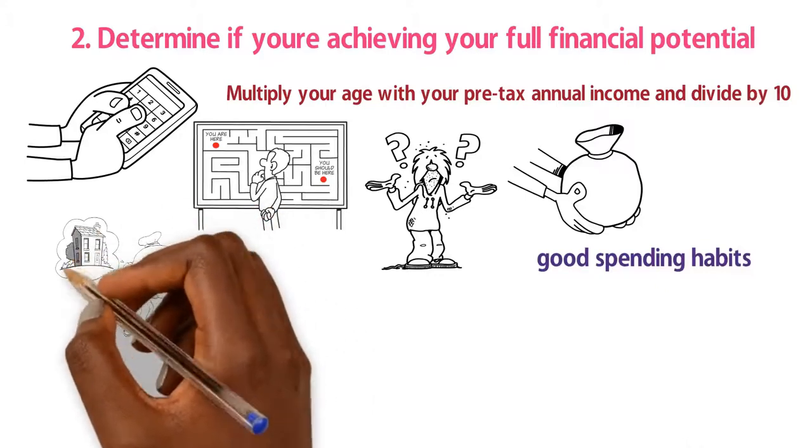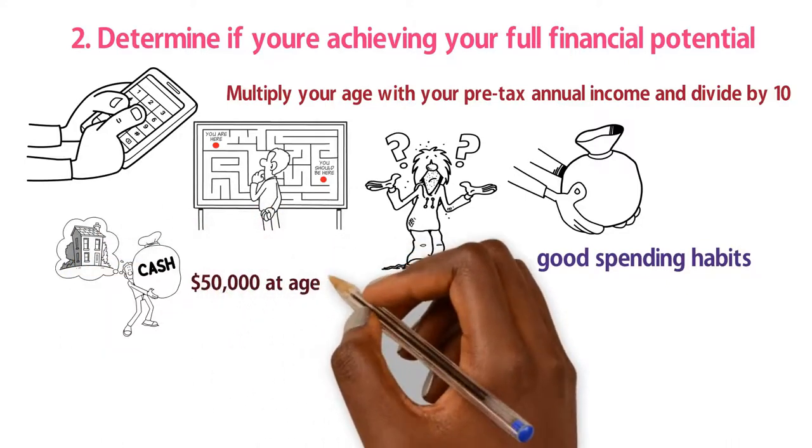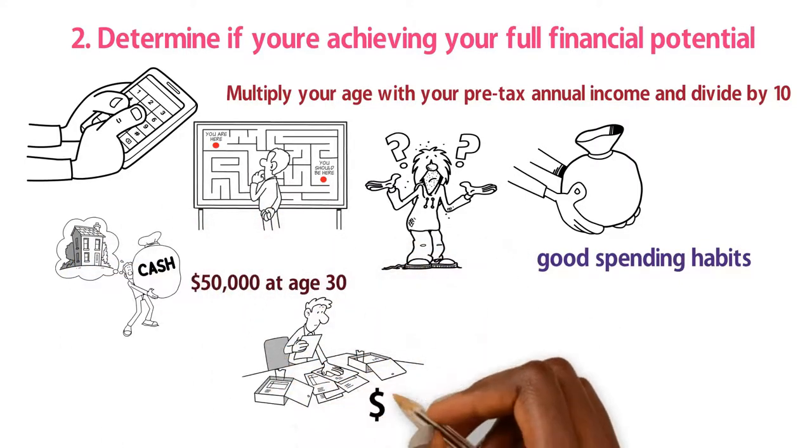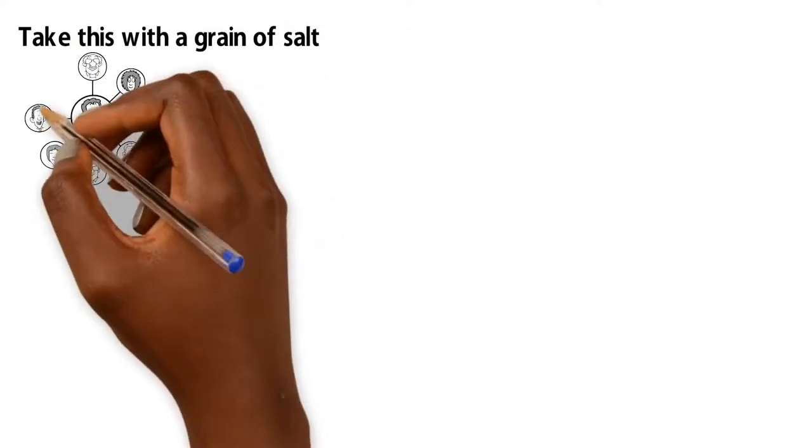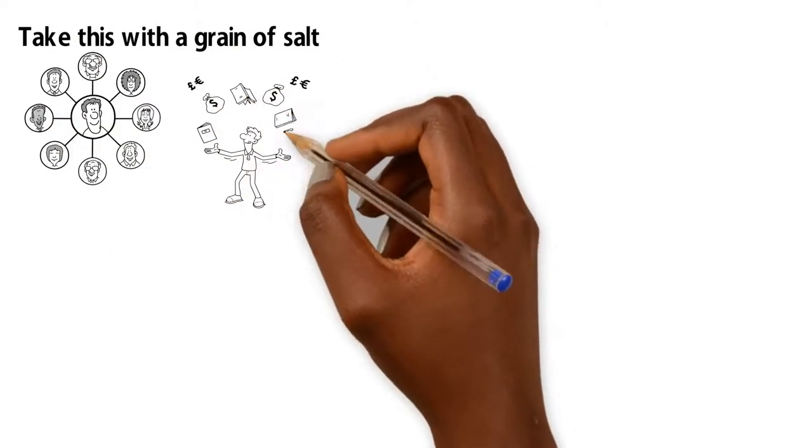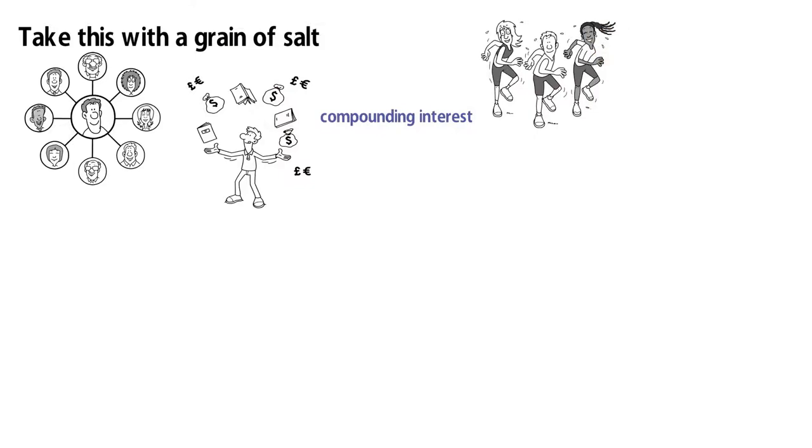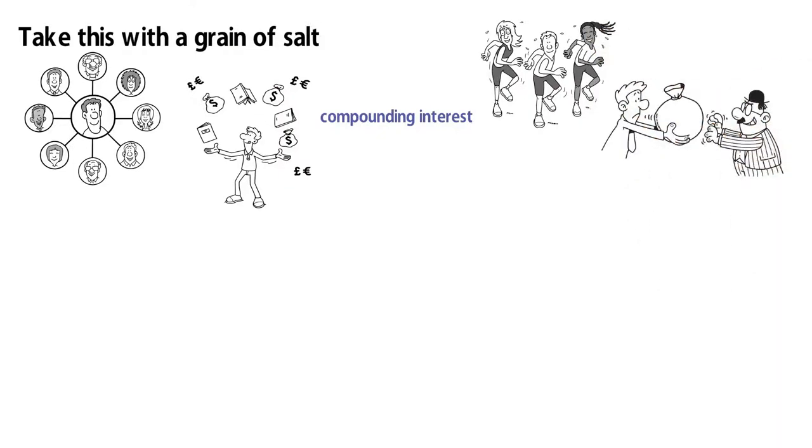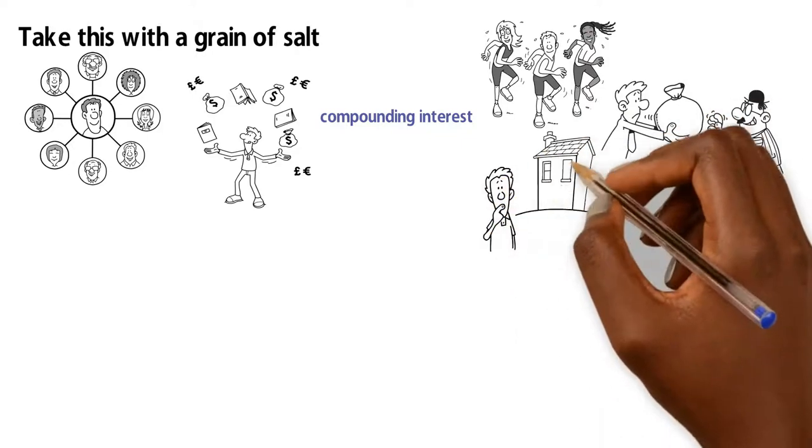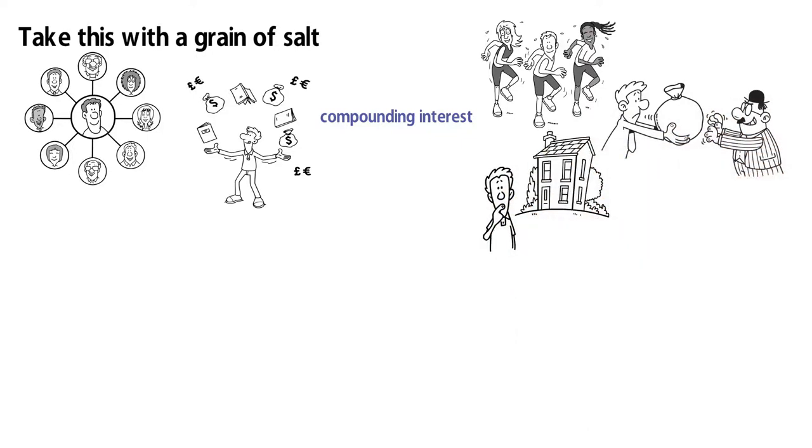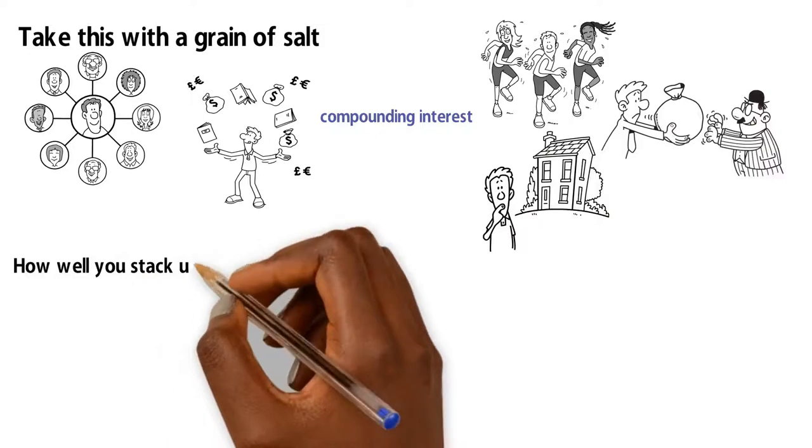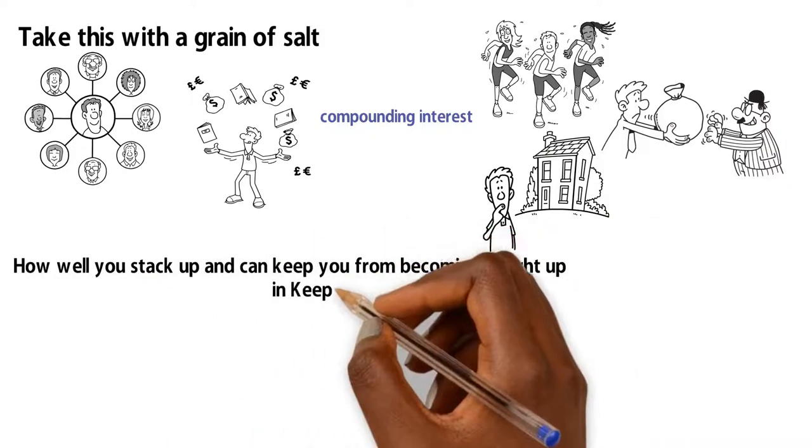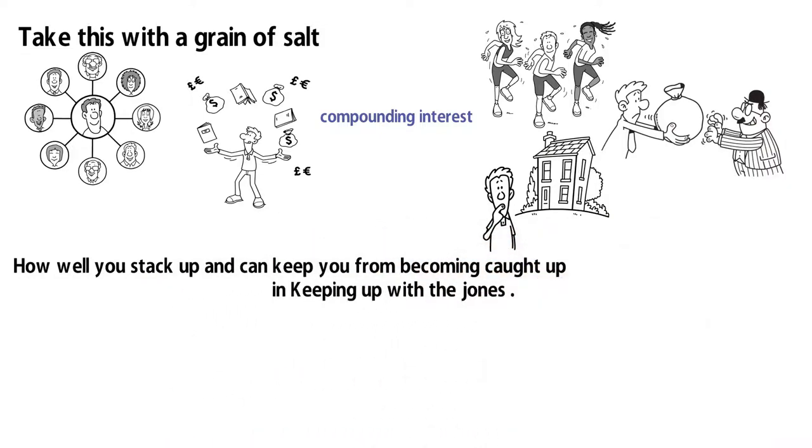For example, if you earn $50,000 at age 30, your expected wealth comes out to $150,000. Now take this with a grain of salt since it takes younger people longer to reach their expected wealth because of compounding interest. So for all the youngsters out there, don't feel bad because a 60-year-old will have reaped the benefits of interest they get on their interest for much longer. But this is a decent indicator of how well you stack up and can keep you from becoming caught up in keeping up with the Joneses.